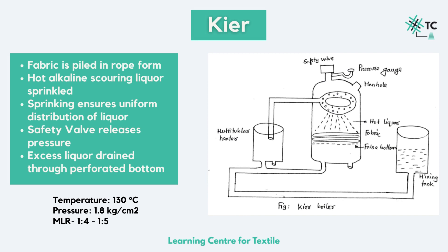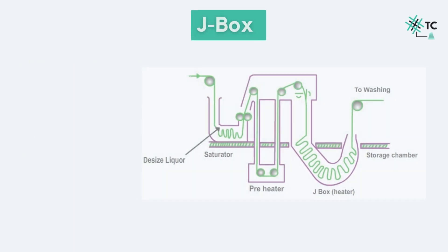The excess liquor is drained through the perforated bottom and the fabric is washed at least two times before unloading. The fabric is loaded with heavy stones on top, with a jute or cotton fabric placed between the fabric and the stones. The kier is not loaded at more than 80 percent of its capacity, or else there are chances of fabric entanglement and improper circulation of the liquor.